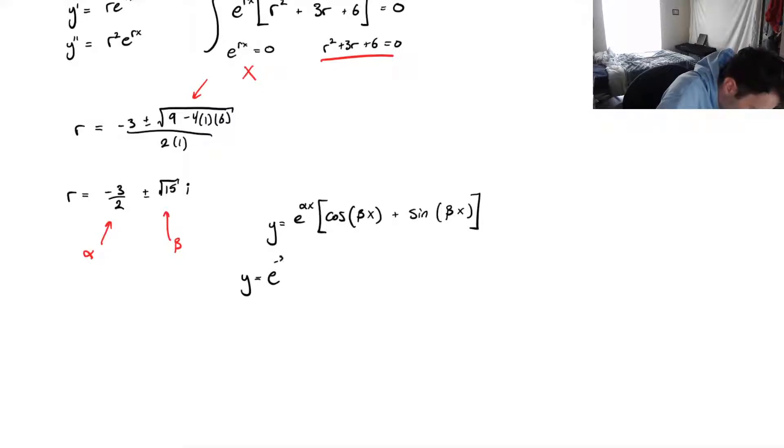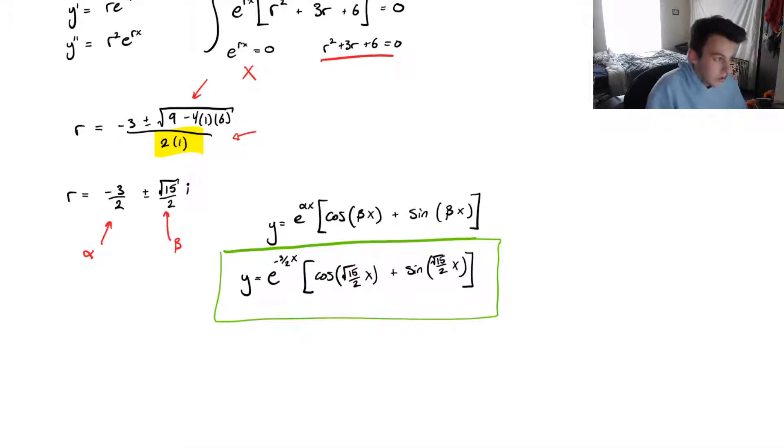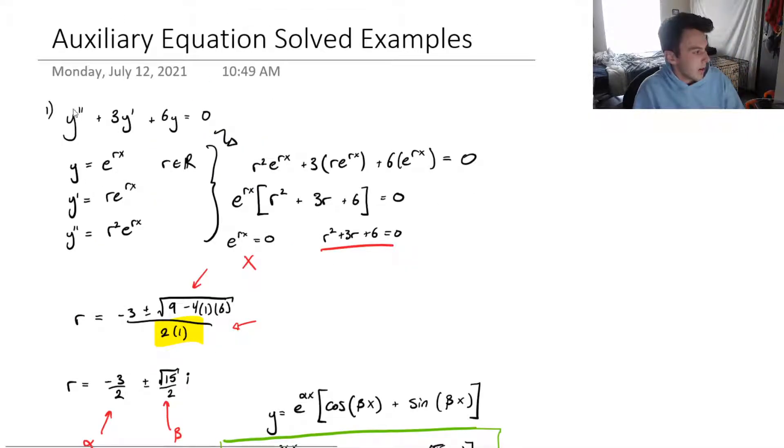So this is e to the negative 3 over 2 x times cosine of, oh, and this should be square root of 15 over 2, don't forget that. Cosine of square root of 15 over 2 times x, plus sine of beta, so root 15 over 2 times x. And there you have it. This is the general solution to the ODE, this ODE right here.